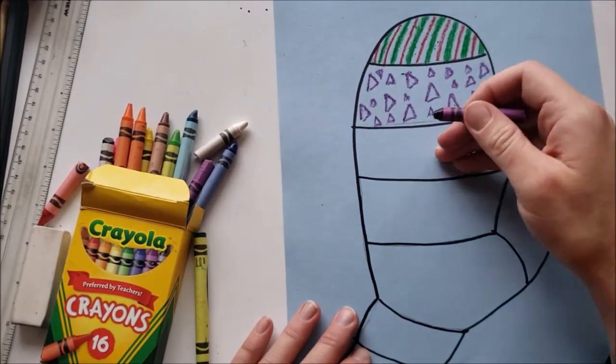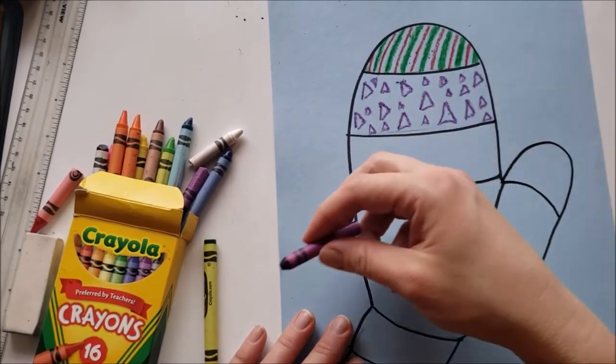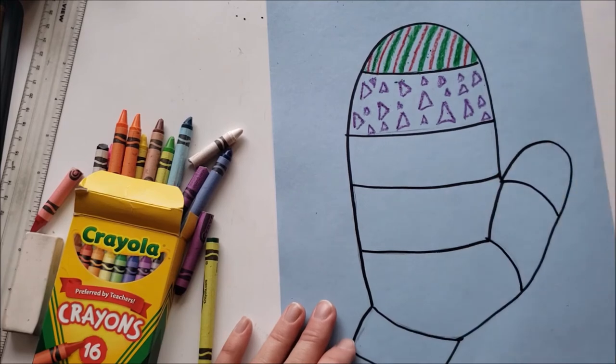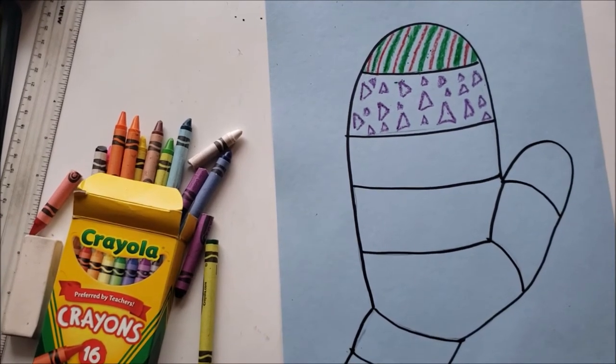So I'm just going to keep going. I'm going to keep filling each section with different patterns, different ideas over and over again until I filled up the whole mitten with some beautiful colorful things. So watch while I do this quick speedy version.